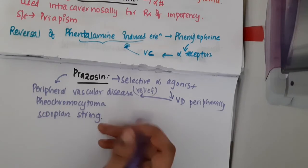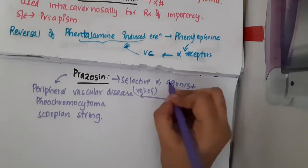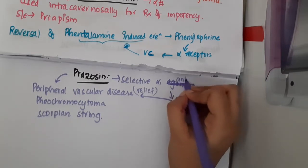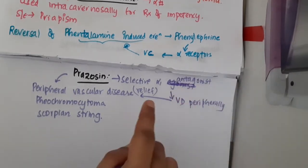Then, obviously pheochromocytoma because alpha 1 antagonism—sorry, it is antagonism, alpha 1 antagonist. That is the reason why it causes vasodilation.